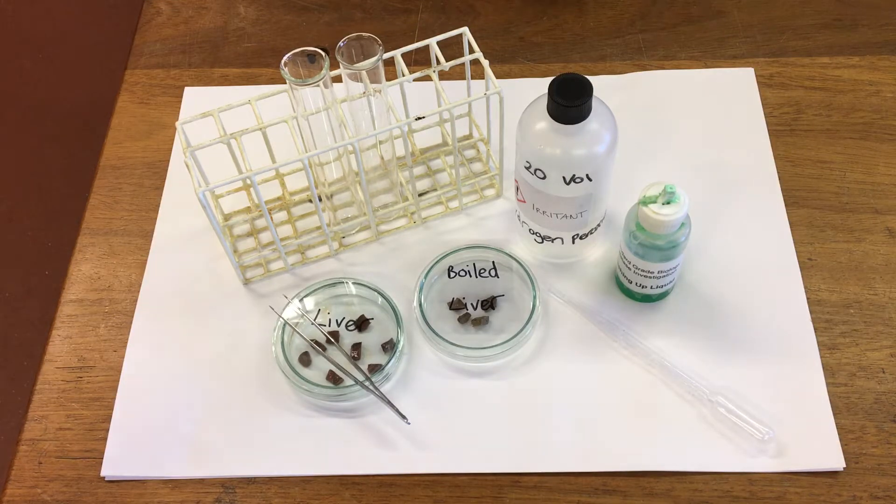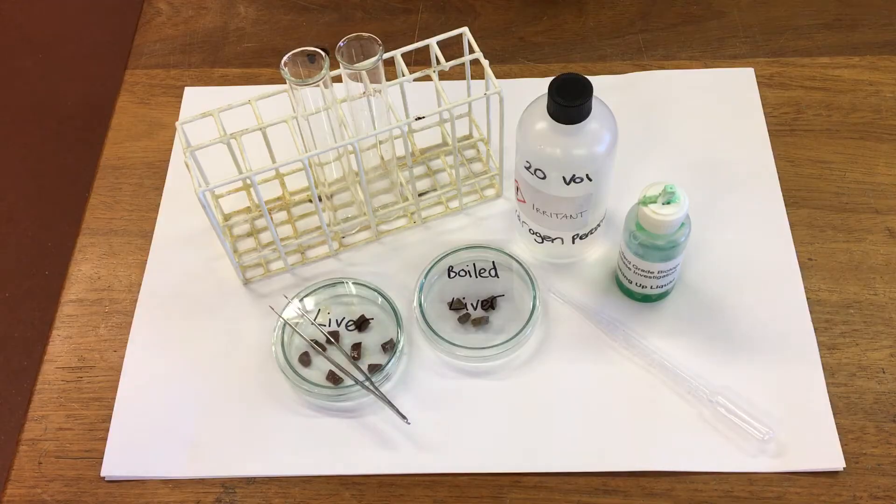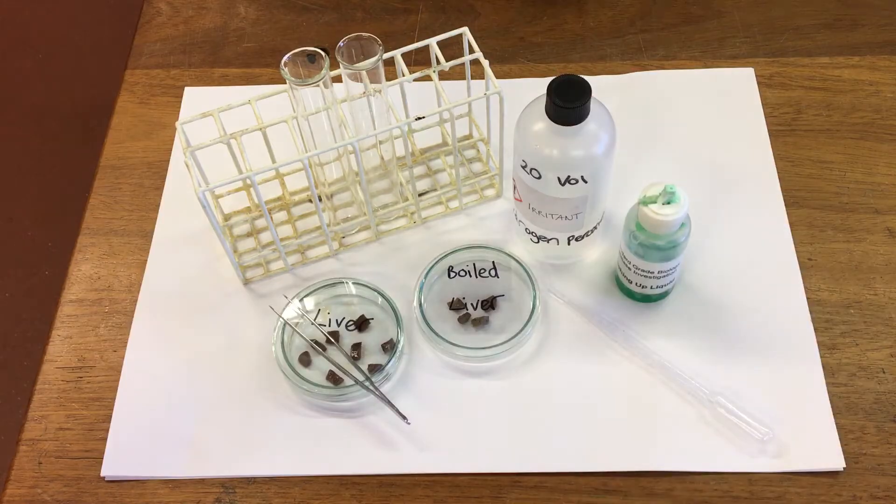In this experiment we're going to look at what happens when we place some liver into hydrogen peroxide. We're going to use some fresh liver, but we're also going to use some liver that's been boiled at 60 degrees.